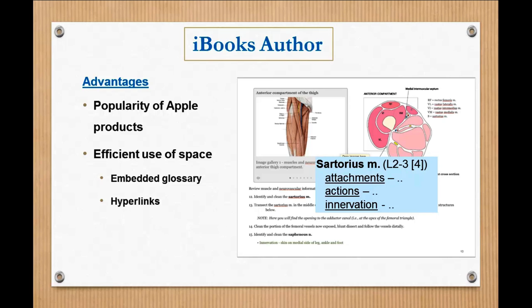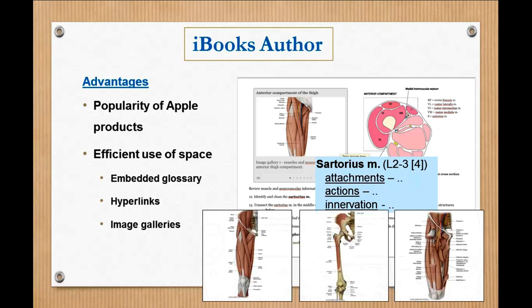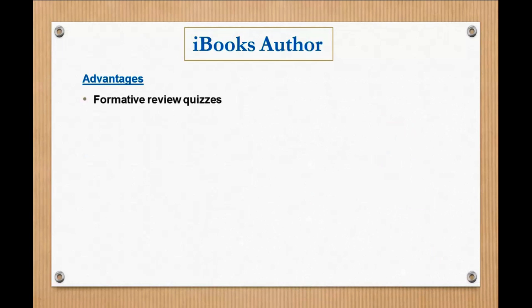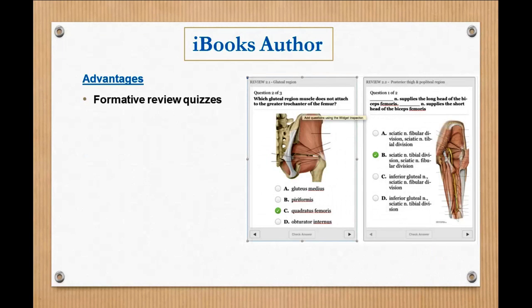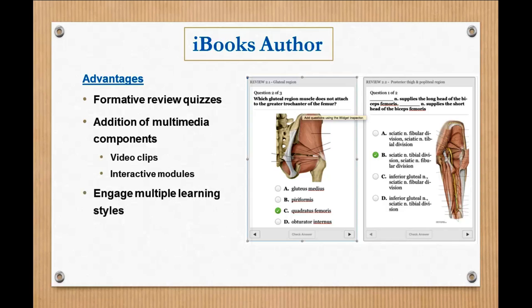You can add hyperlinks to different websites or videos. You can also add image galleries. So you can scroll through and see a bunch of different images, different views from different sources. Have anterior compartments, see the muscles. You can see the attachments on the bones, the neurovasculature. So they can scroll through and see all that. Also you can add these formative quizzes. There's a bunch of different questions that you can scroll through and track their progress or use it to study right before the exam. You can add multimedia components like video clips, interactive learning modules. And with all these aspects you can better engage multiple learning styles, like your visual, auditory, kinesthetic.